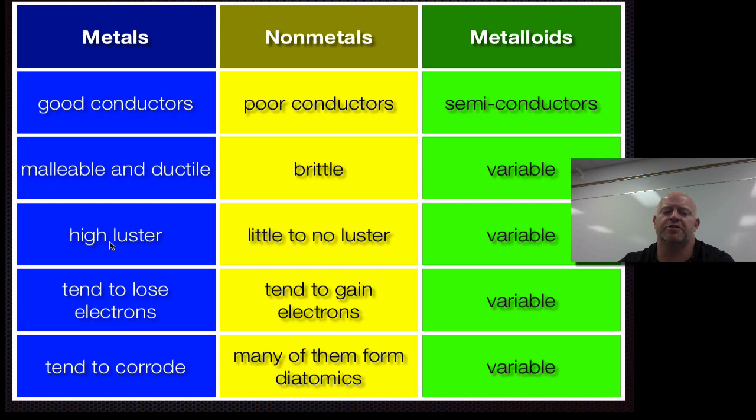Metals, you can shine to a high luster. So they can look shiny to us. Whereas non-metals tend not to. Metals almost always lose electrons when they ionize. So they end up being positively charged. Whereas non-metals tend to gain electrons. So they're almost opposite of each other.